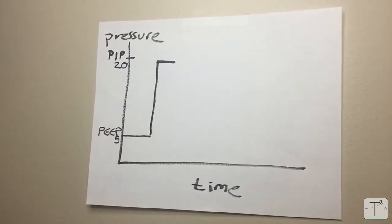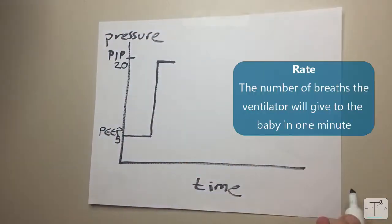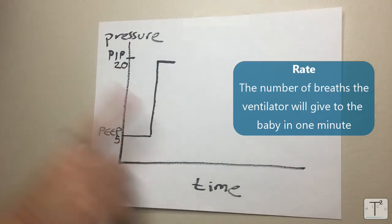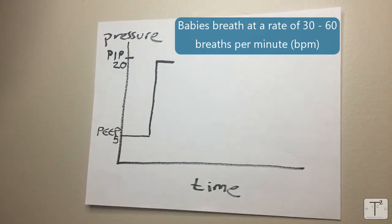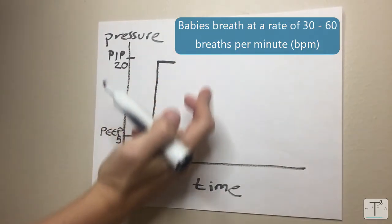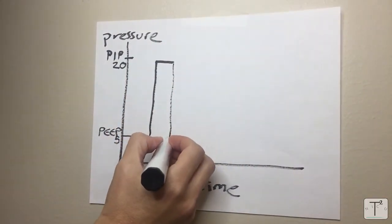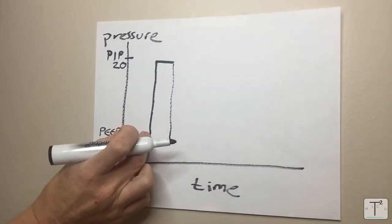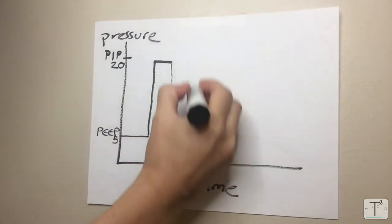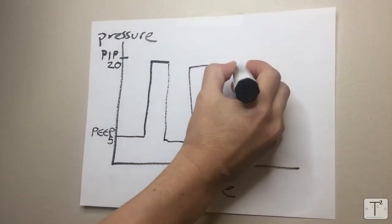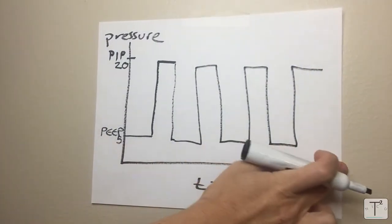The next thing you need to decide on your machine is what the rate of breaths that you're giving is going to be or how many breaths is the machine going to give in one minute. Babies breathe faster than adults between 30 to 60 times a minute. So if the rate is 30 then there'll be 30 breaths in a minute or one breath every two seconds. One breath would be taken up by a PEEP and a PIP so that would be considered one breath. So then we have another breath here, another breath here, and another breath there, so on over the course of a minute.